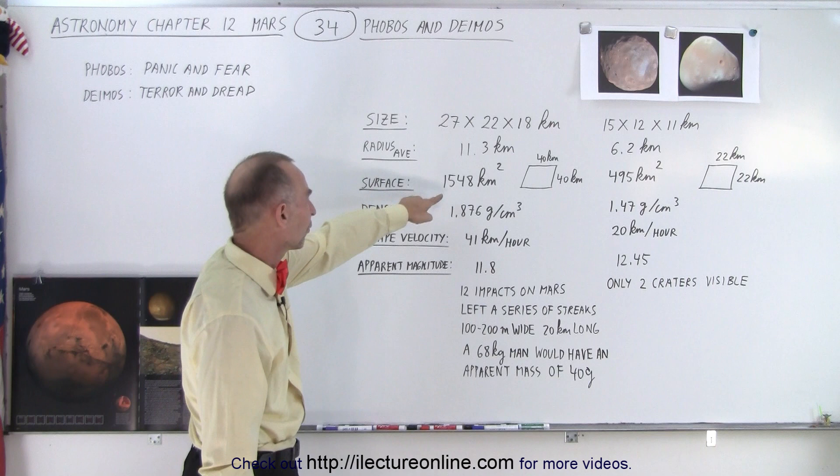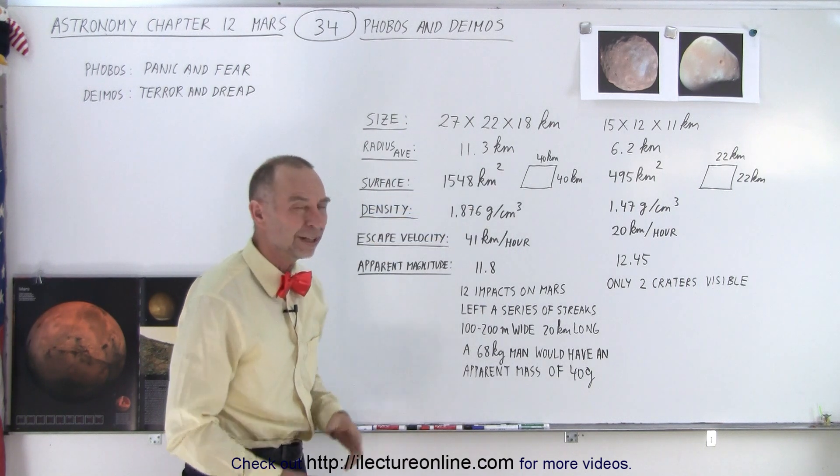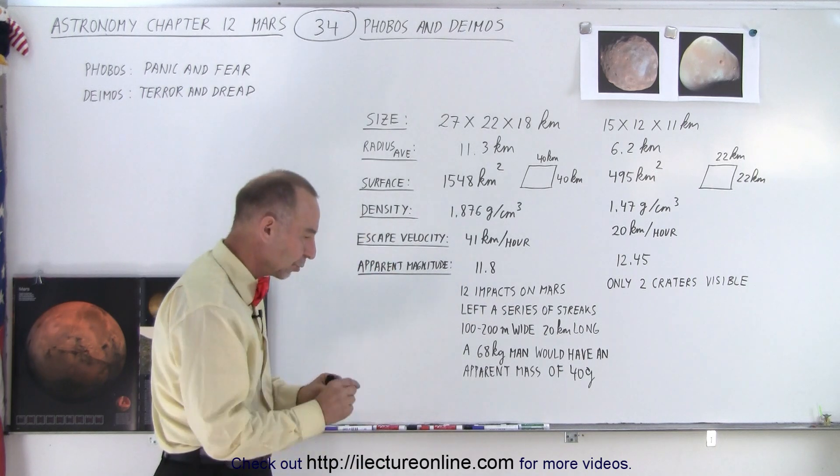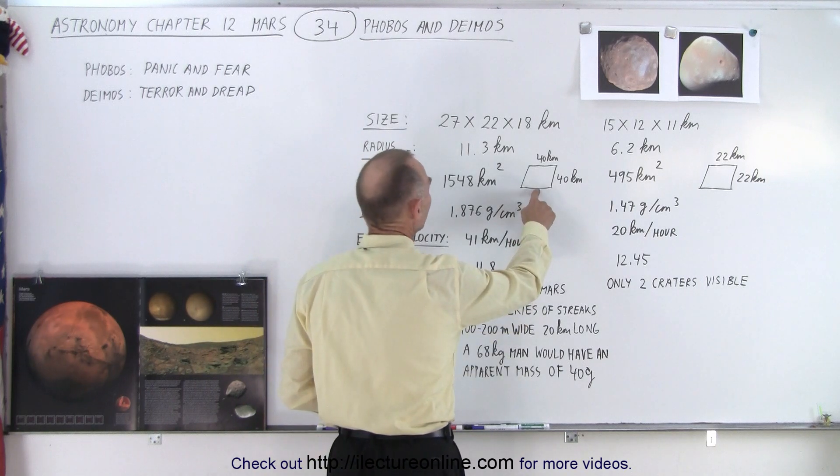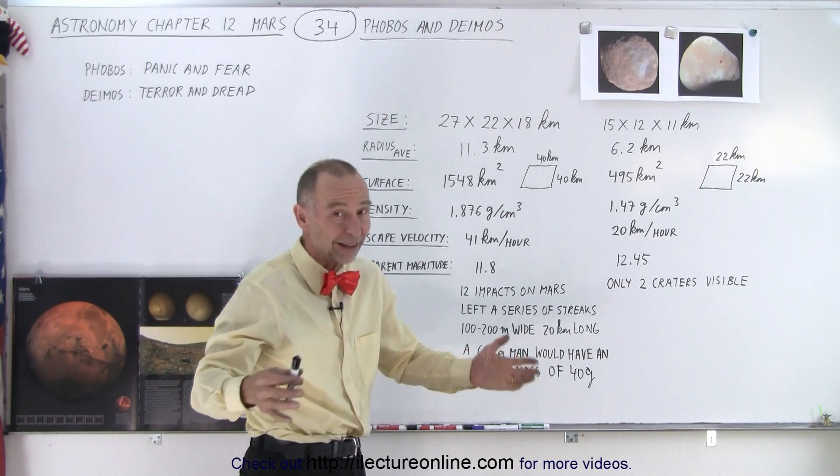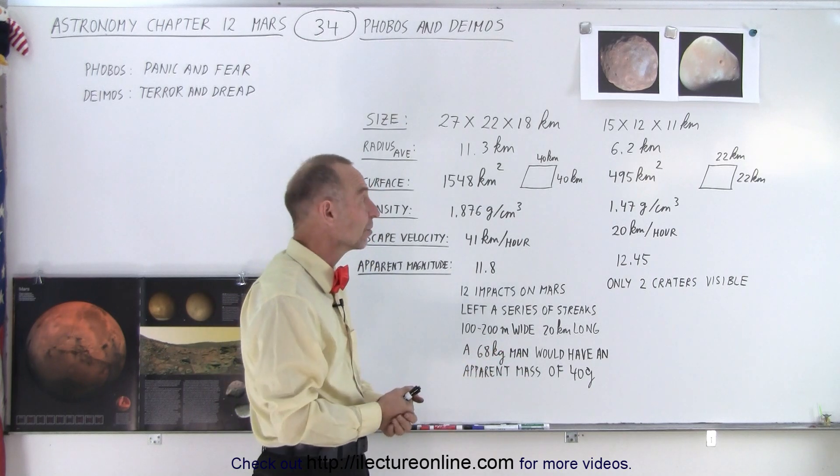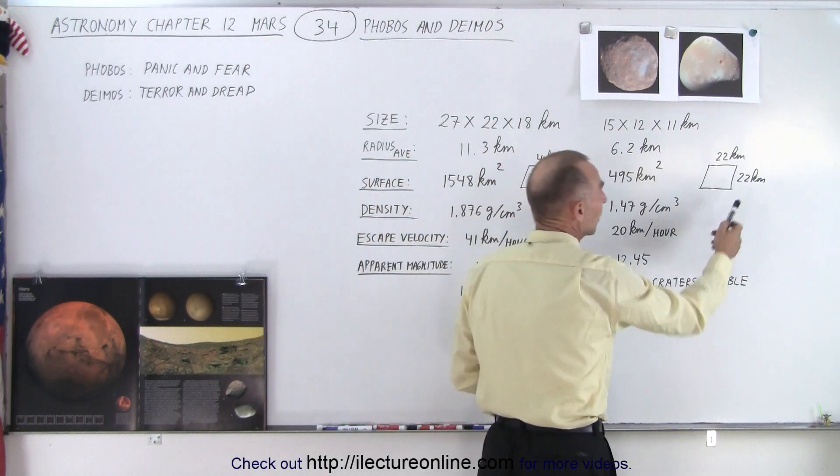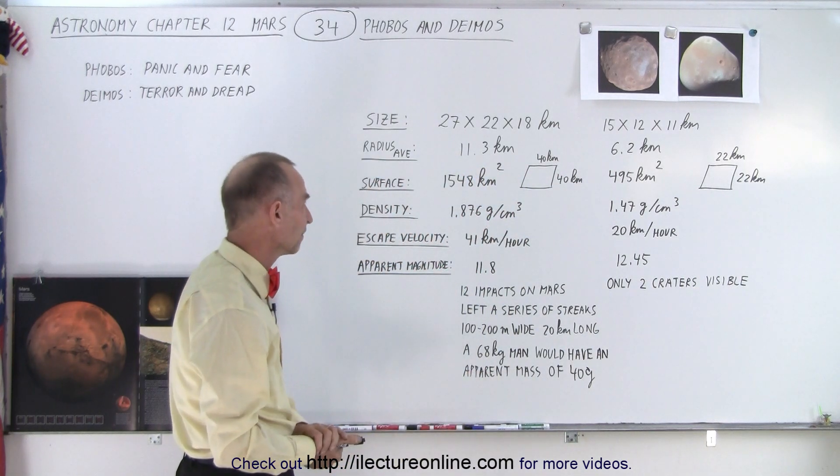Surface-wise, notice that the surface area is 1548 square kilometers for Phobos and 495 for Deimos. To put that in perspective, if you were to put that into a square area, the area of Phobos would be about 40 by 40 kilometers, which is about the size of a large city, essentially 25 by 25 miles.